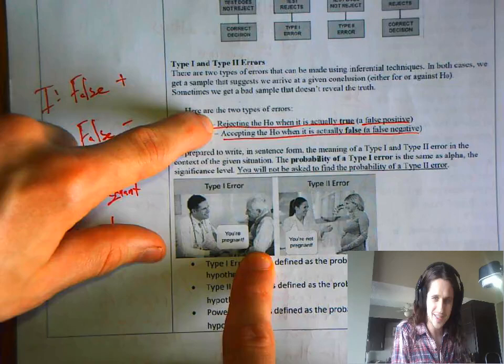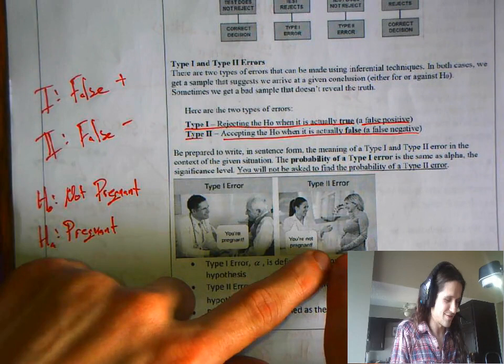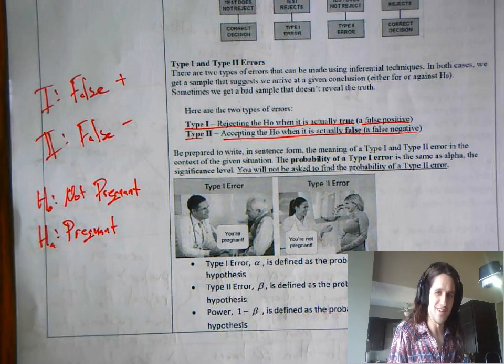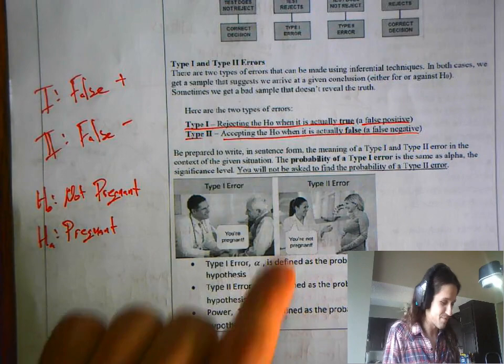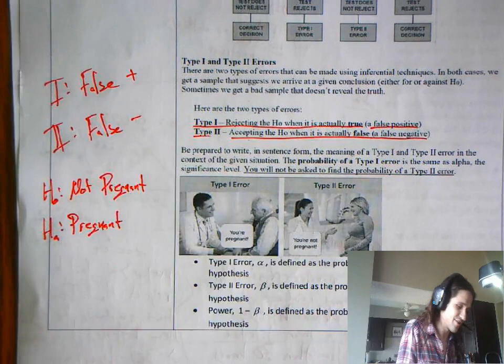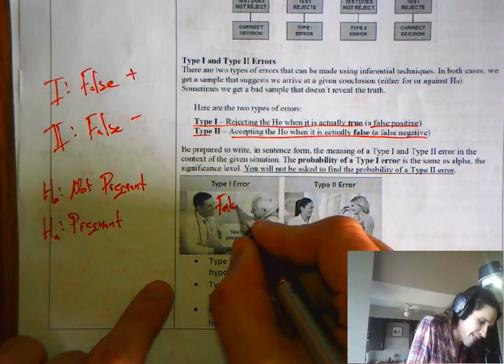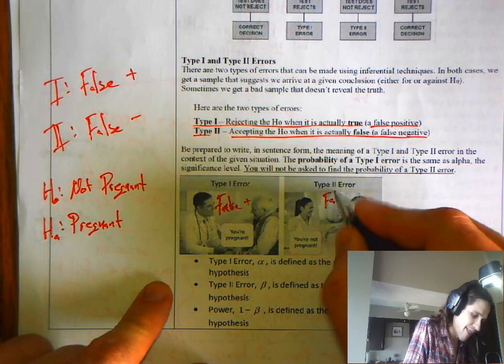This lady over here, she is pregnant. As sure as we can tell from a picture. We don't ever tell from a picture because we let them tell us. This is a type 2 error though. Accepting the null when it's actually false. That's a false negative. False positive on the left. Type 2 error, that's a false negative on the right.